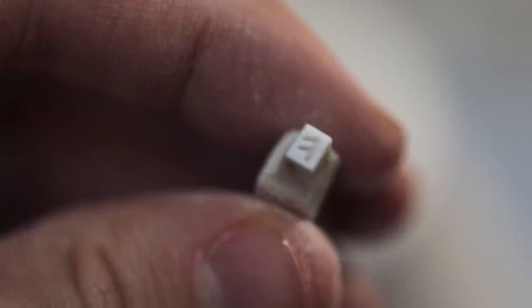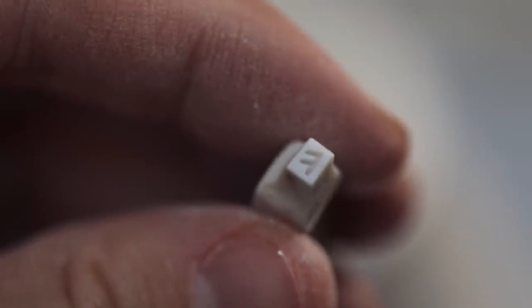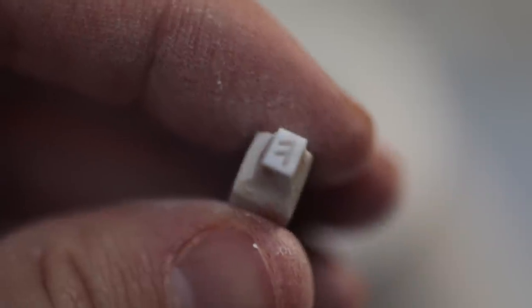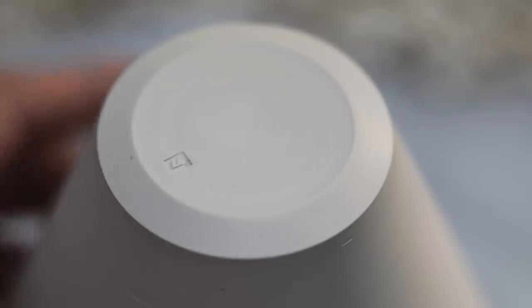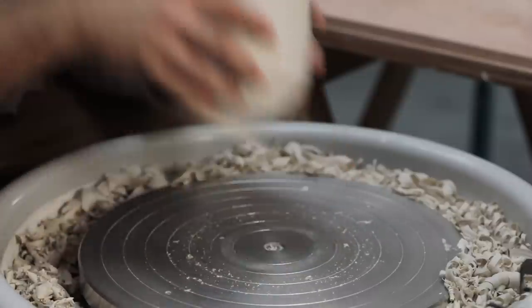And then finally, I take my porcelain maker's mark and push it just ever so slightly into the base, gently rocking it from corner to corner so that it leaves a very legible impression. And with this vase done, I can move on to the next.